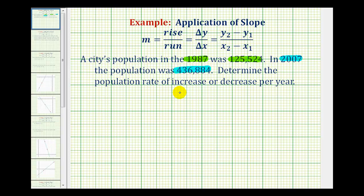This is actually an application of slope. We can represent the given data as ordered pairs, then determine the slope of the line that would be passing through those two points, and that would be our average rate of increase or decrease in population over this time period.